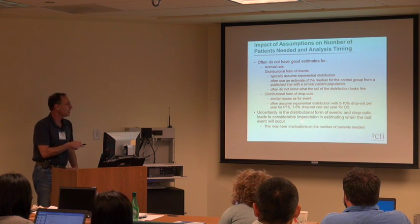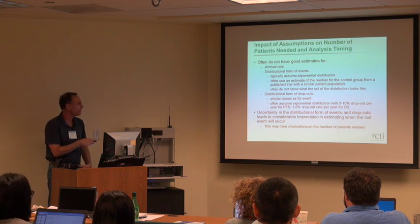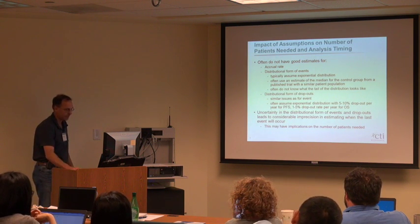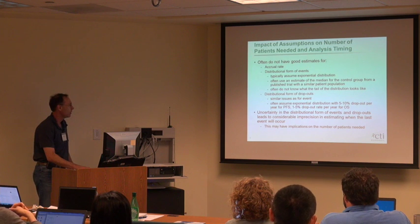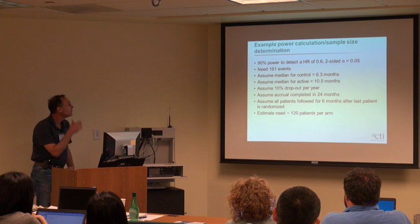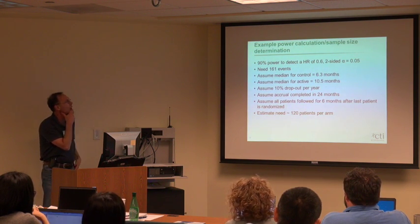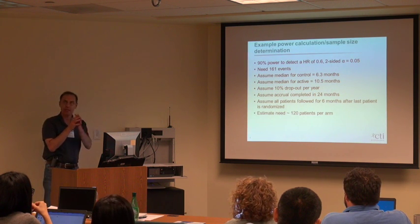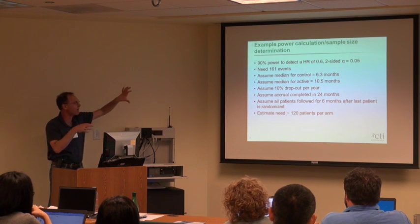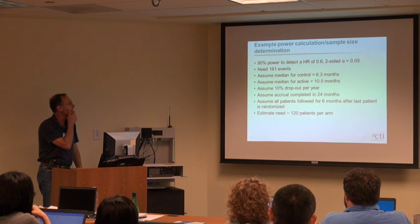The uncertainty in the distributional form of events and dropouts leads to considerable imprecision in estimating when the last event will occur and when we'll actually be doing the analysis — and this could have implications for the number of patients needed. I'll go through a quick power calculation and sample size constructed based on real data to show some of the issues I'm finding with estimating analysis timing.